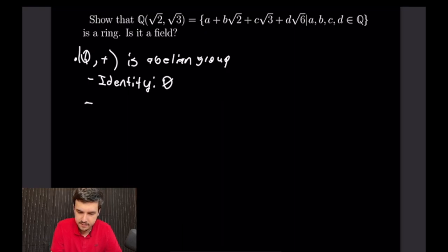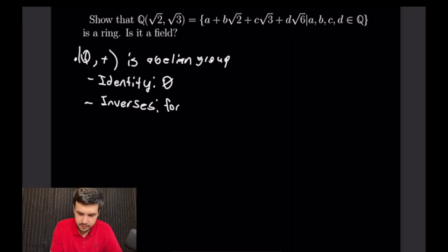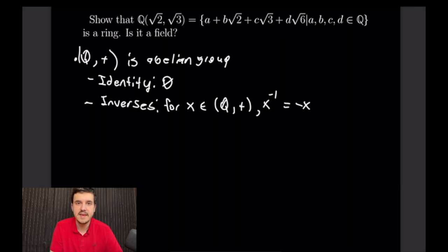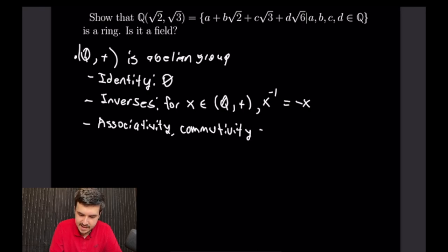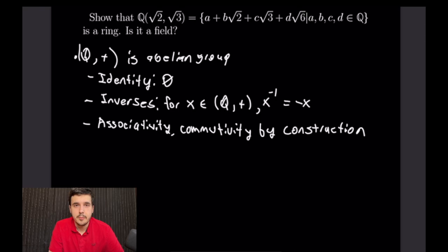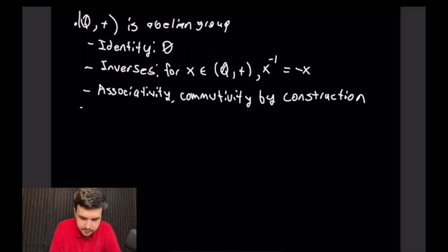For inverses: given an element x in Q, its inverse is simply −x, since x + (−x) = 0, our identity. Because this group's operation is regular addition, associativity and commutativity both hold by construction — they are built into standard addition.